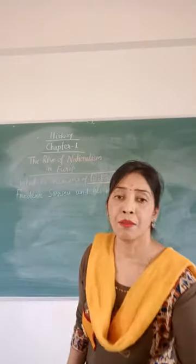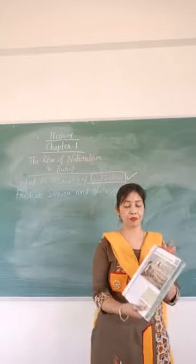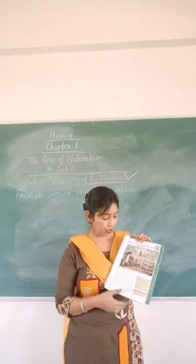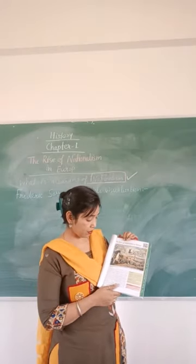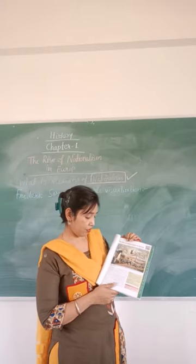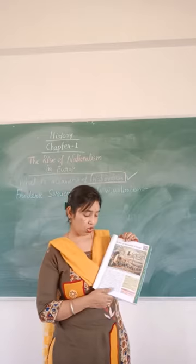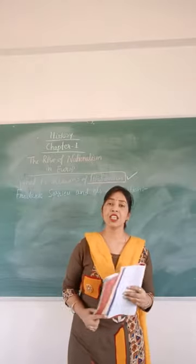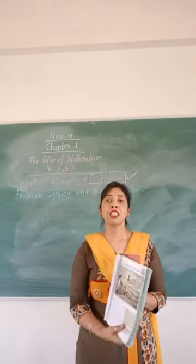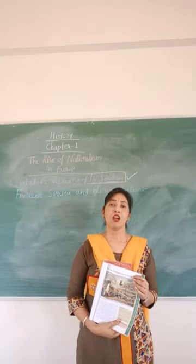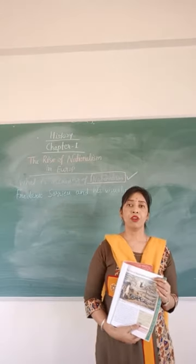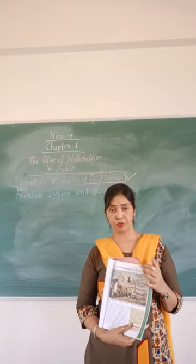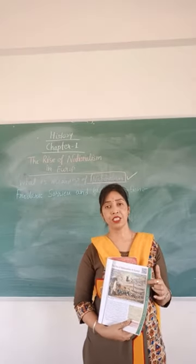Students, please open your history book. On the first page you will see a painting — carefully watch this painting. It was made in 1848 by Frederic Sorrieu, a French artist. In 1848, Sorrieu prepared a series of four prints visualizing his dreams of a world made up of democratic and social republics, as he called them. Watch this painting and carefully listen to me.